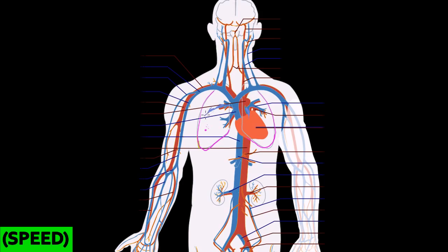The pulmonary arteries split into arterioles and eventually capillaries — super small tubes. They run right past the alveoli and then become oxygenated. Now we're going back to the heart, so we're talking about pulmonary veins. The capillaries get oxygen and return to the heart. Now we have oxygenated blood — shown in red — and that gets pumped out to the rest of the body.